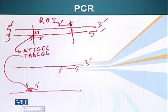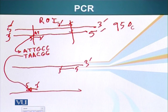Now this primer annealing is done at a lower temperature. This temperature is about 95 degrees Celsius. This temperature is generally about 55 degrees Celsius.